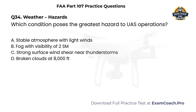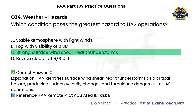Weather — Hazards. Which condition poses the greatest hazard to UAS operations? A. Stable atmosphere with light winds. B. Fog with visibility of two statute miles. C. Strong surface wind shear near thunderstorms. D. Broken clouds at 8,000 feet. Correct answer: C. Strong surface wind shear near thunderstorms. The FAA identifies surface wind shear near thunderstorms as a critical hazard, producing sudden velocity changes and turbulence dangerous to UAS operations.